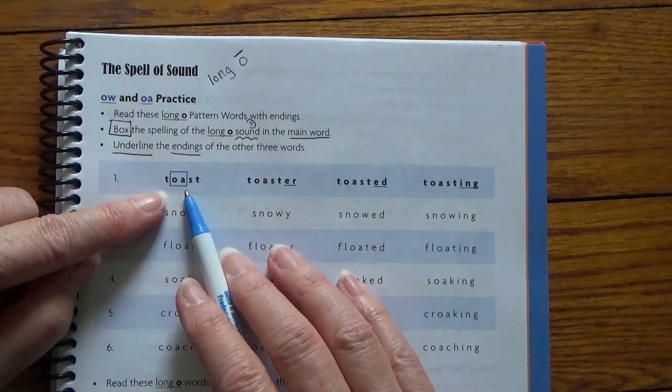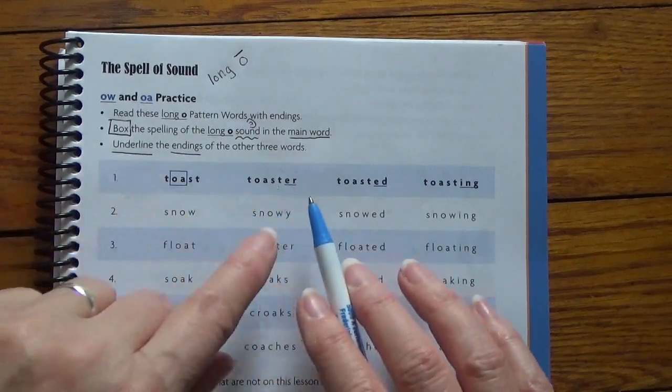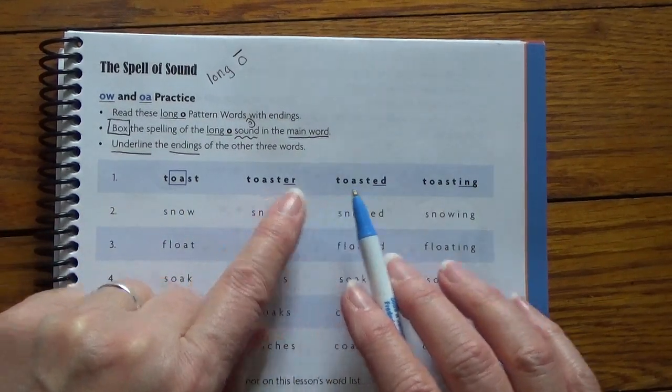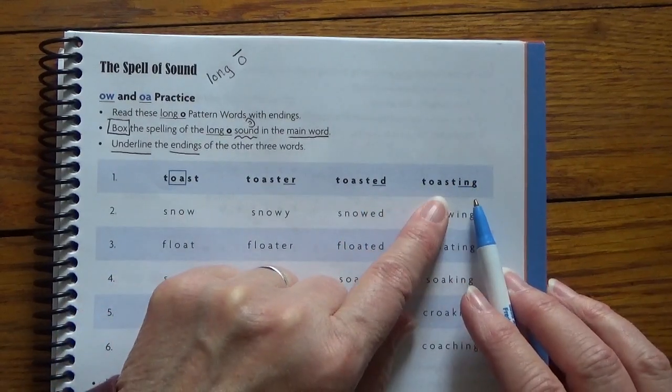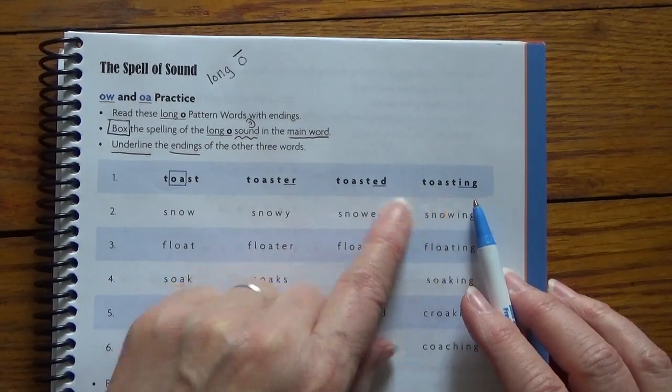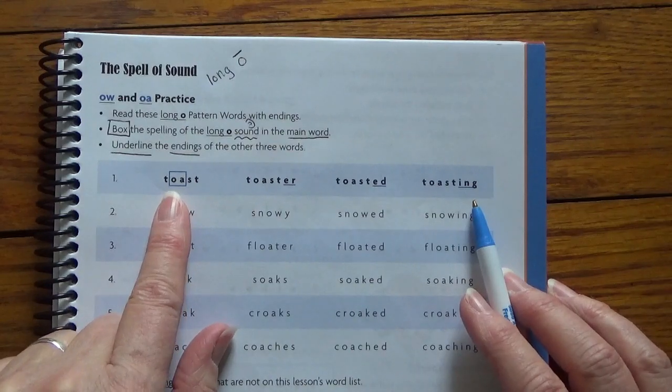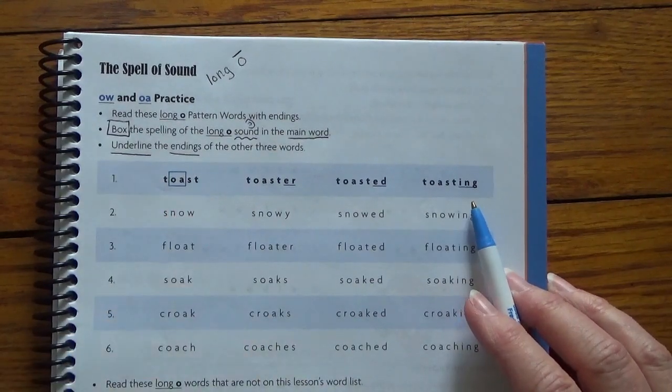I'm going to box the spelling of the long O in the main word. Oh, I see. And then underline the endings in the other three words. So all of these words right here are made out of the main word or the base word some people call it. Toast.